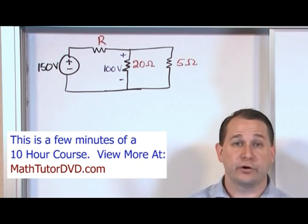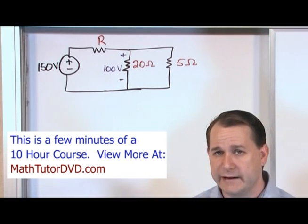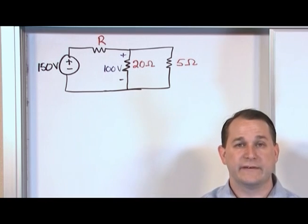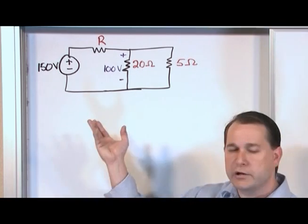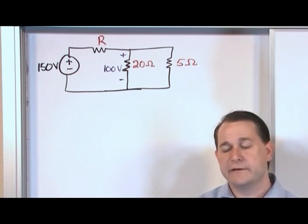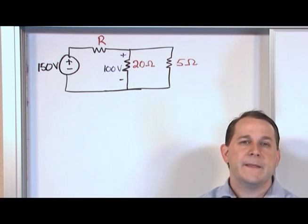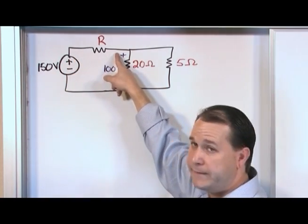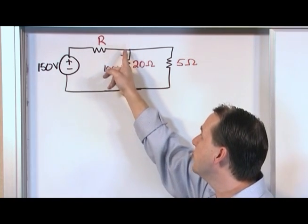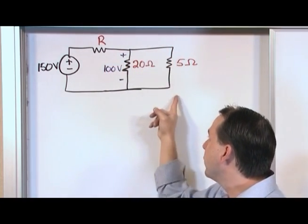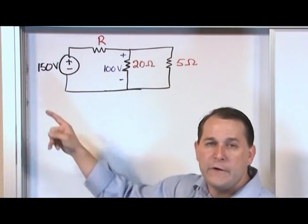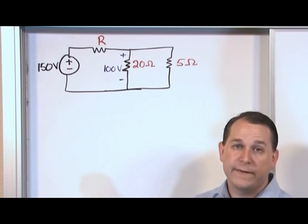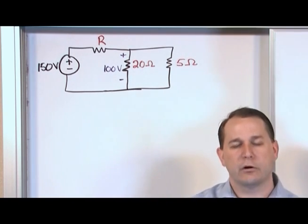Anytime you see a circuit that's a little bit beyond basic complexity, what you really need to do is redraw the circuit with some labeling. On a test you may not have time, so you can use the original drawing and draw your own labels. We know that current comes out of the source and goes this way. When it gets to this node, it goes down one branch and over the other. When the current comes back around, it rejoins and goes back to the source. So we need to redraw with labels to use Kirchhoff's current law and voltage law.